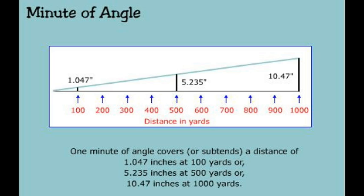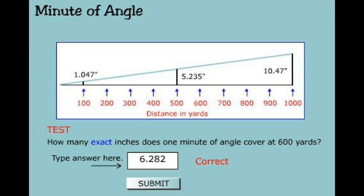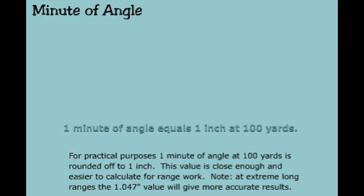That is the breakdown as you increase the distance. Each minute of angle adds that same number to the last. So minute of angle at 200 yards would be about 2.54 inches. And see, that's where the simplification comes in. Instead of trying to do that math, we simplify it. 600 yards would be 6.282 inches, but if you just simplify it, you simplify it to one minute of angle equals one inch at 100 yards.